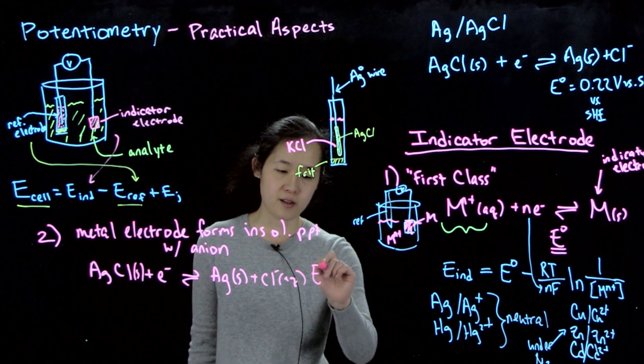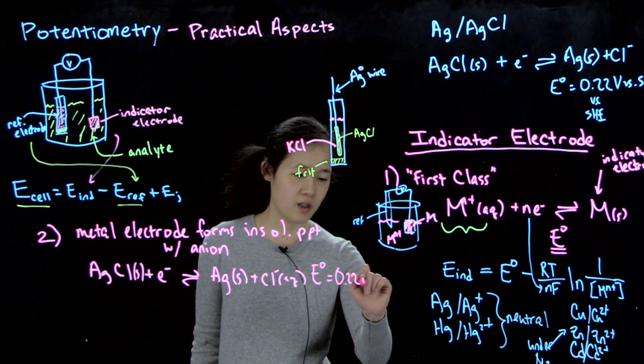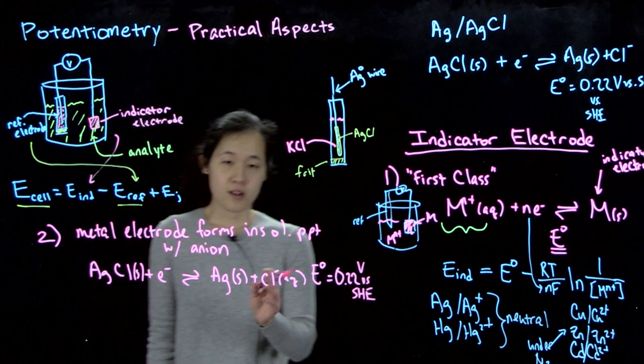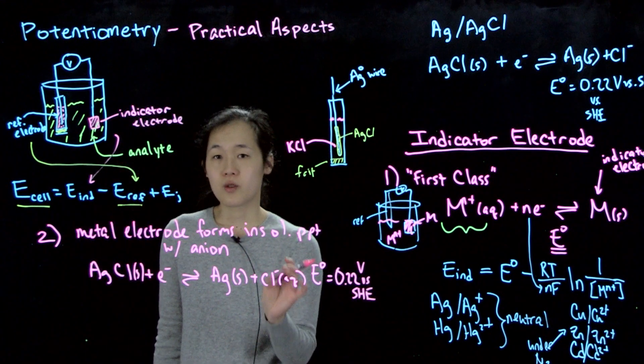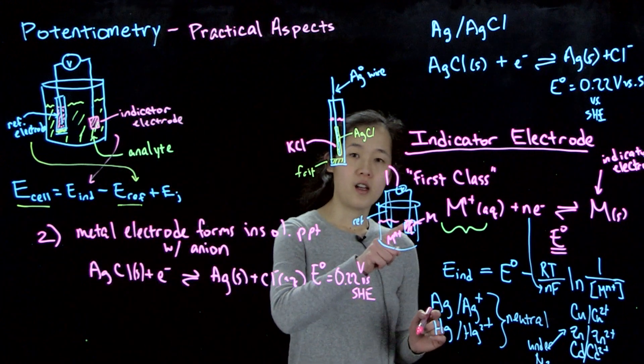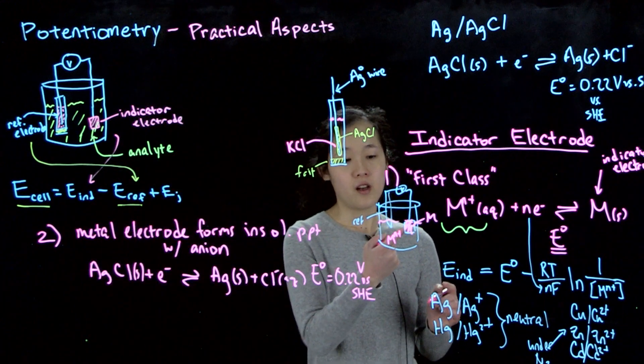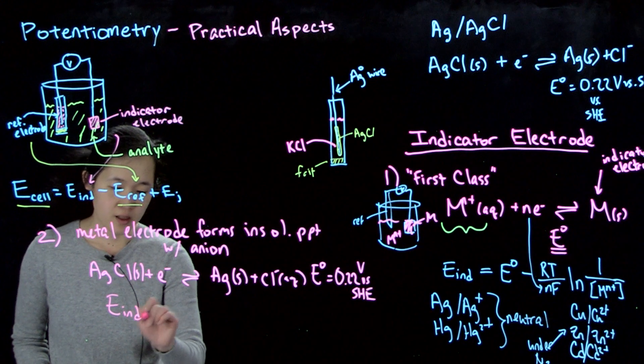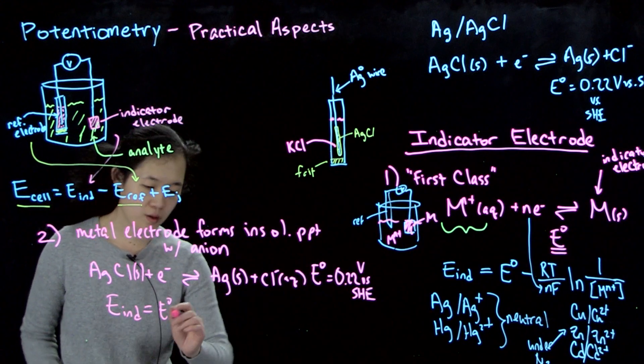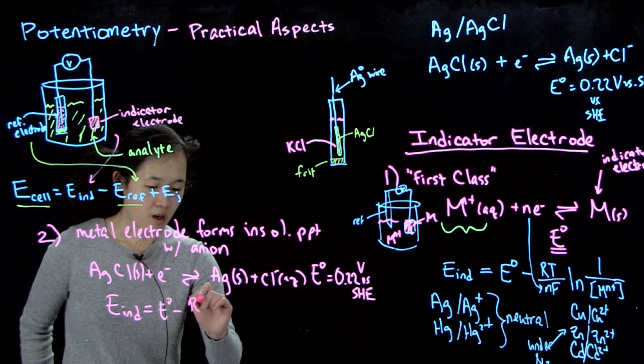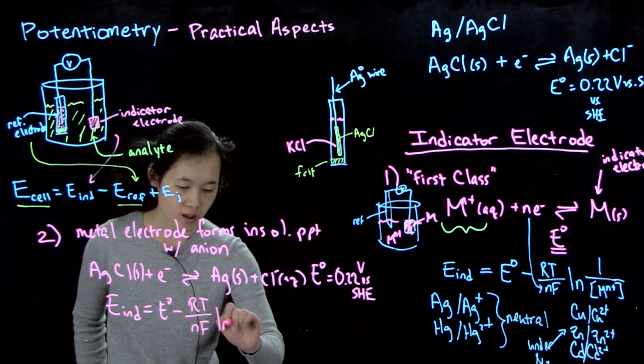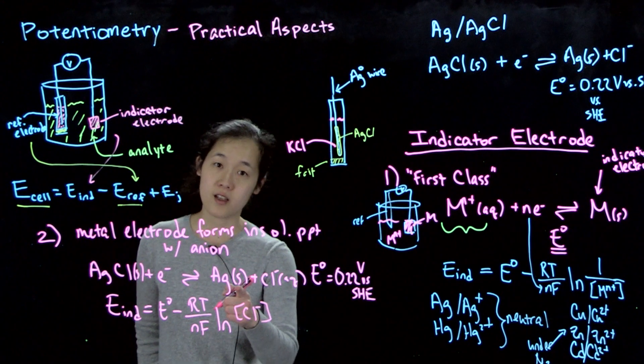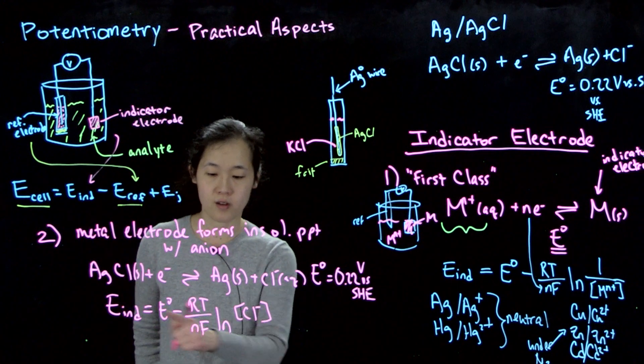And then this has that unknown potential, which I believe is 0.22 volts versus SHE. So now we can determine the concentration of chloride ions in solution. So if we have, again, if our indicator electrode is now made of silver, like a silver wire, we can then figure out chloride concentration because we should know that our indicator potential is going to be equal to this E naught, this 0.22, minus RT over NF log. In this case, chloride is in the product. It's going to be chloride concentration. Solid activity is 1. This solid activity is 1. So we'll have chloride concentration.